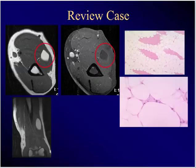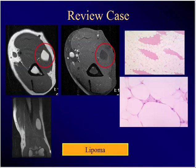This is an easy one. A middle-aged person with an asymptomatic lump in their arm. What's the diagnosis? Intramuscular lipoma. Excellent.